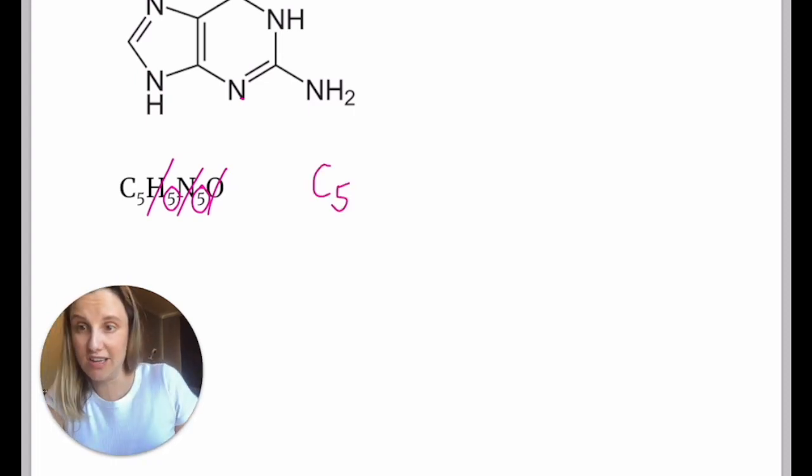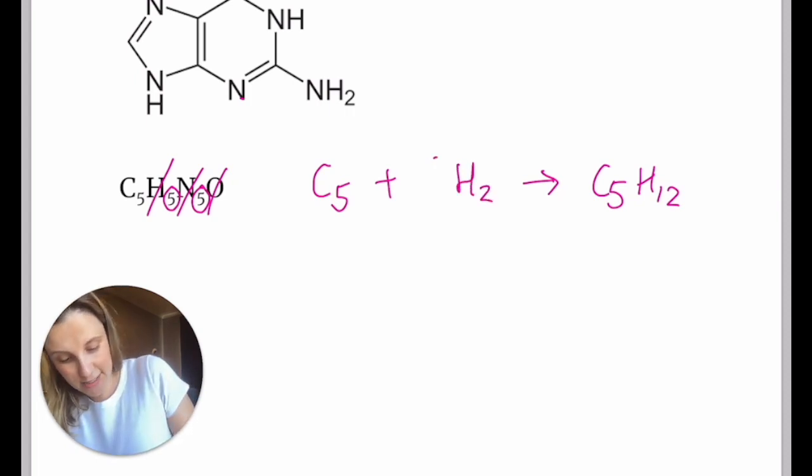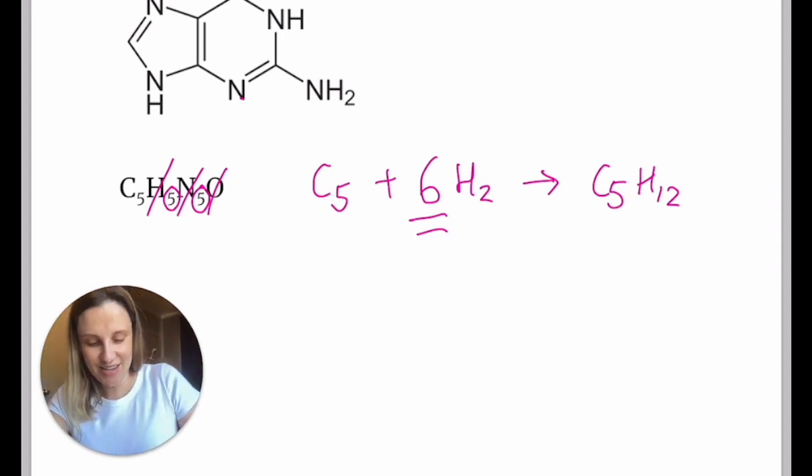So that means I'm literally just left with C5. And I'm going to think about what saturated alkane that forms. So C5, 2n plus 2, so it should be H12. So thinking about how many H2s I would need to add in order to make it saturated, and thank God we get the same answer, gives you six. So the IHD in this example is six.